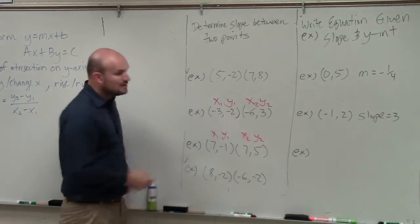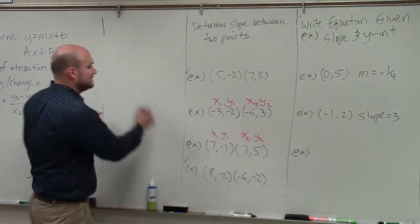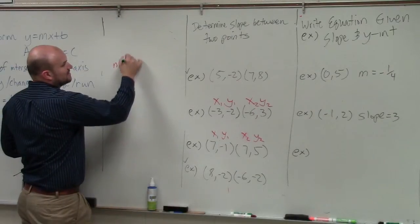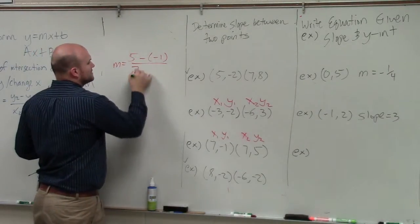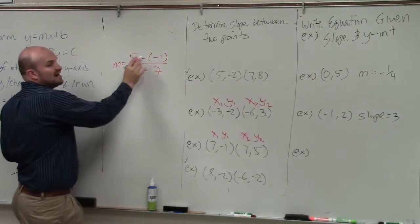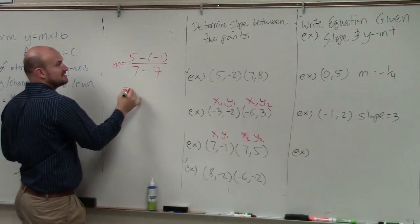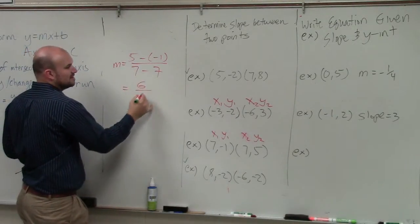Just remember, it's always xy. So therefore, if we're going to do a problem like this here, I would say m equals 5 minus negative 1 all over 7 minus 7. Well, 5 minus negative 1, again, that's the same thing as adding, so that would be 6 over 0.